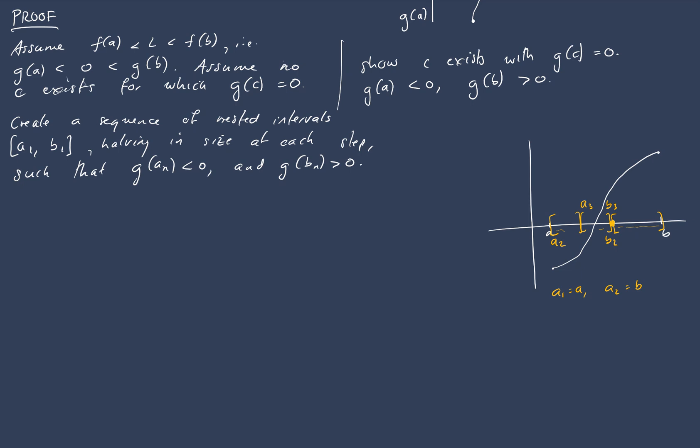So we have a sequence of nested intervals and by the nested interval property there is a point that is in every single interval. So there exists a point x* such that a_n is less than or equal to x* is less than or equal to b_n for all n. So we have this point. It's going to be in every single interval so that's going to be an interesting point.